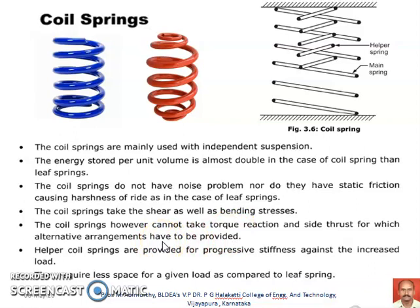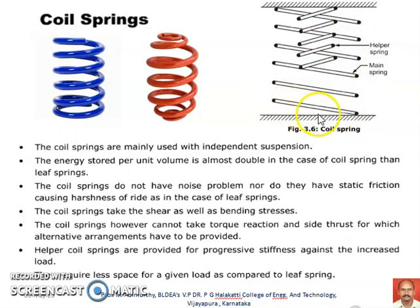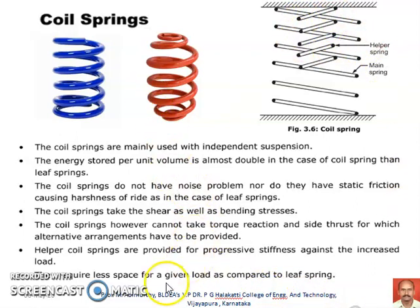Coil springs cannot effectively take cornering forces and torque reactions. The helper spring shown in this arrangement is also a coil spring and is used for providing progressive stiffness in case of increased load. Initially the load is taken by the larger main spring as long as its stiffness is sufficient. Once the load increases beyond the main spring's capacity, the helper spring comes into picture and progressively takes whatever additional load is coming over the arrangement.